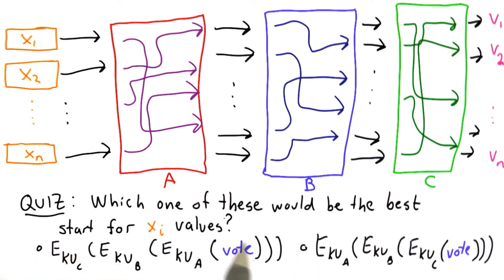So the question is, which one of these would be the best choice for the Xi values? And neither of these is a correct choice. Neither of these will work securely. We're going to have to do some other things. But which one of these is the best starting choice?